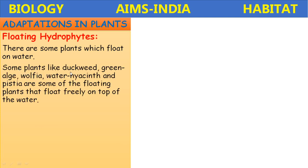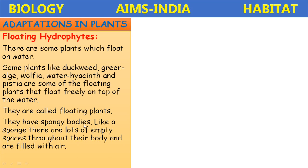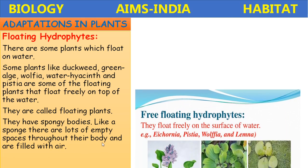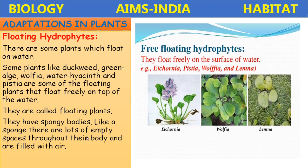Plants like duckweed, green algae, Wolffia, water hyacinth, and Pistia are floating plants that float freely on top of the water. They have spongy bodies made of spongy tissue called aerenchyma. Like a sponge, there are lots of empty spaces throughout their body that are filled with air.